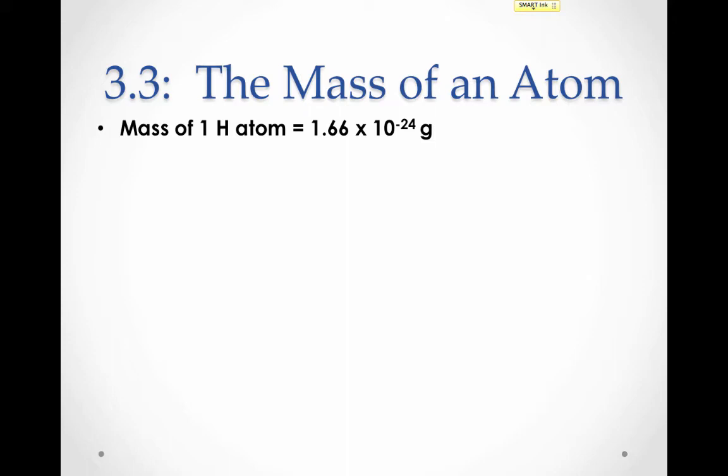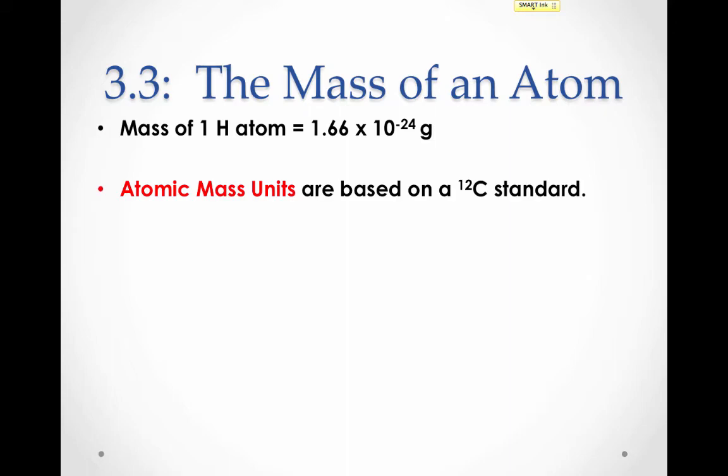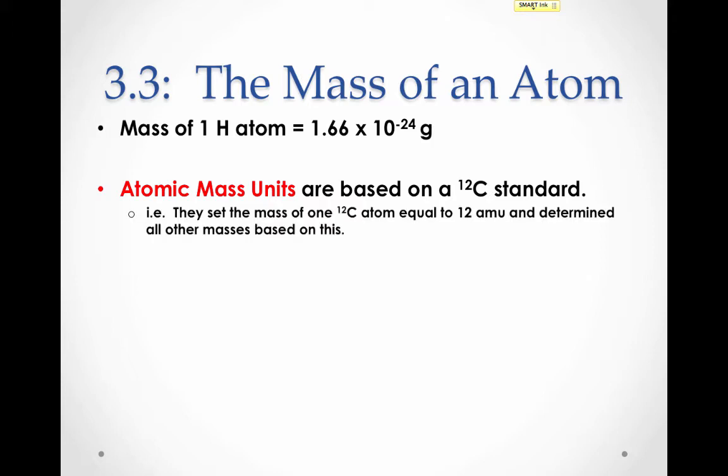Since it's inconvenient to talk about the mass of individual atoms in terms of grams, scientists essentially invented a unit to use. That unit is called the atomic mass unit. Atomic mass units are a standard of measurement — they decided to set the mass of one carbon-12 atom, an atom of carbon with a mass number of 12, equal to 12 AMUs. In comparison, the mass of every other element could then be derived.